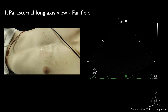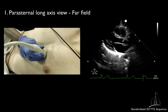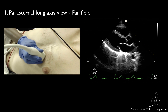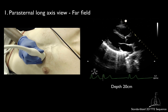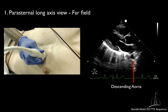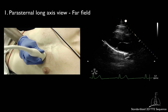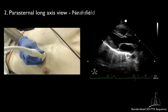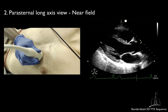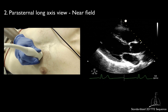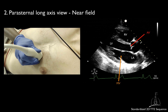Your examination should start with the parasternal long axis view. Begin by including the far field with at least 20 cm of depth. This will enable you to diagnose pleural and/or pericardial effusions and to assess the descending thoracic aorta. Once you have obtained the far field view, decrease the depth to focus on cardiac structures, but try to keep the descending aorta in the field.